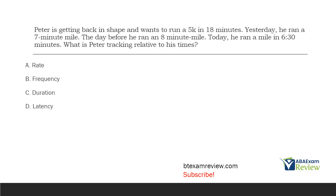Peter is getting back in shape and wants to run a 5k in 18 minutes. Yesterday he ran a seven-minute mile, the day before he ran an eight-minute mile, and today he ran a mile in six minutes and 30 seconds. What is Peter tracking relative to his time? We need to know what he is tracking because Peter wants to get his mileage down. Rate is frequency plus time — do we have frequency? Is Peter counting anything? He's not. He's looking at how long each mile is. There's no frequency per time, it isn't like miles per day.